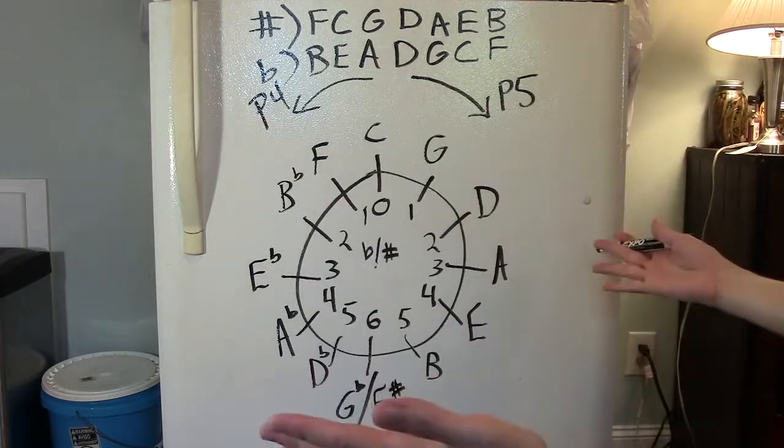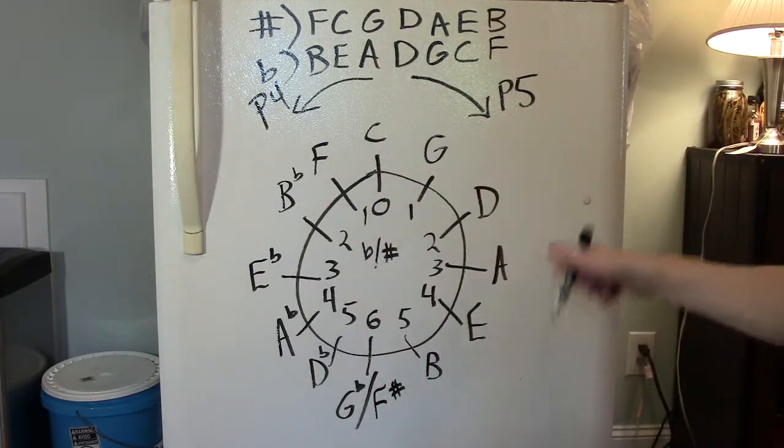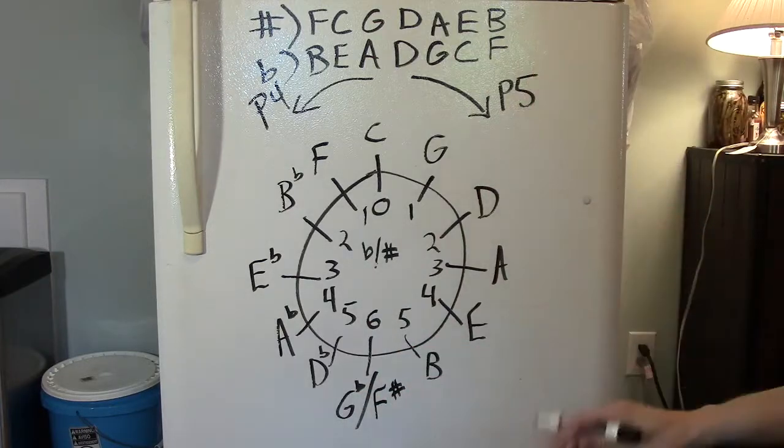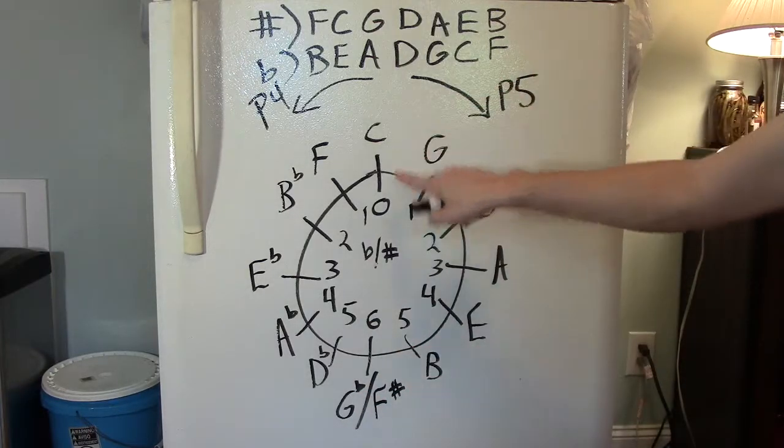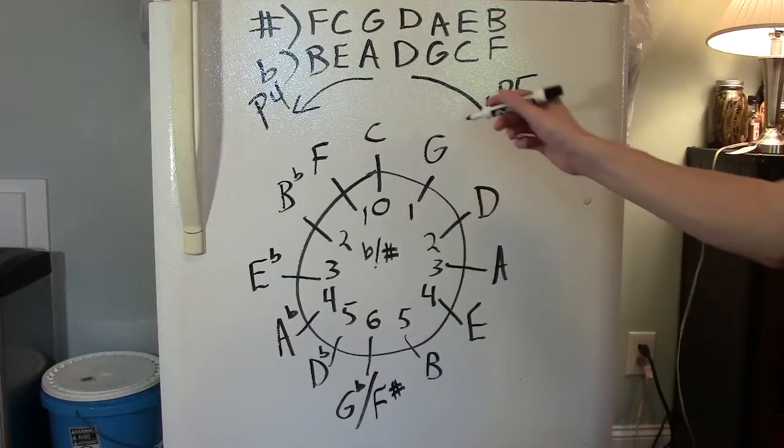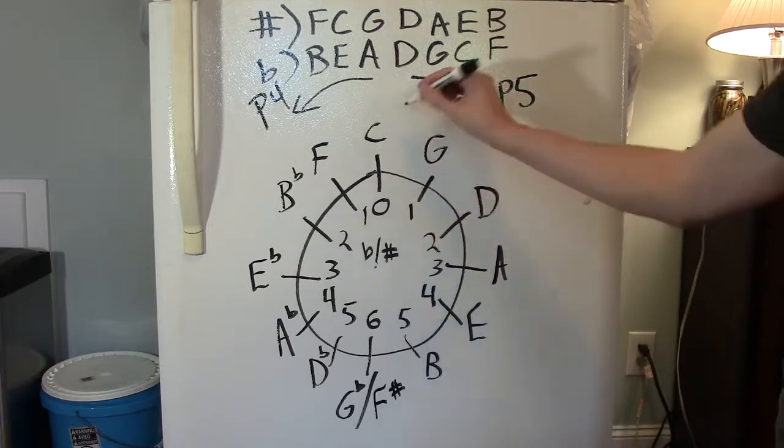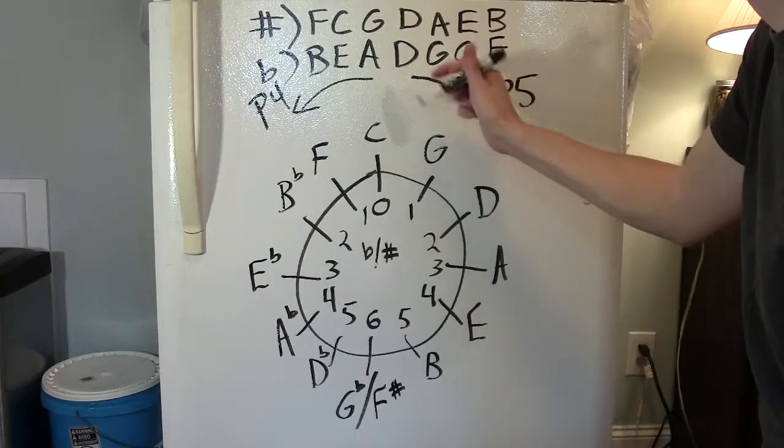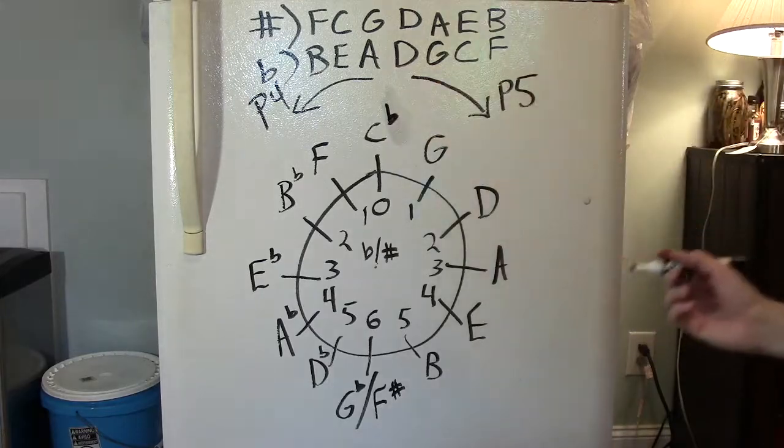This leaves us with a dilemma. Look at the circle. What key would have all sharps or all flats? If C major has no sharps, C sharp major will have all the sharps. In C flat major, we'll have all the flats.